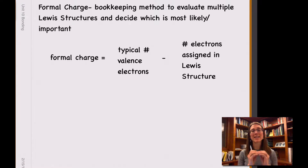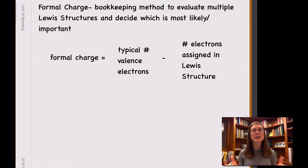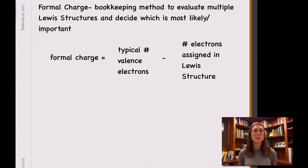I want to emphasize that it is just a bookkeeping process. Really, on the actual molecule, we can't talk about individual atoms having a positive one or a negative one or whatever charge it is, because these electrons are actually being shared — that's why it's a covalent bond. But for bookkeeping purposes, we can get a lot of insight as to what the most important Lewis structure is going to be.